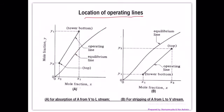If we were to have stripping column, then we can see that the operating line lies below the equilibrium line. So the location of the operating line would be different if we were to use absorption column or stripping column.